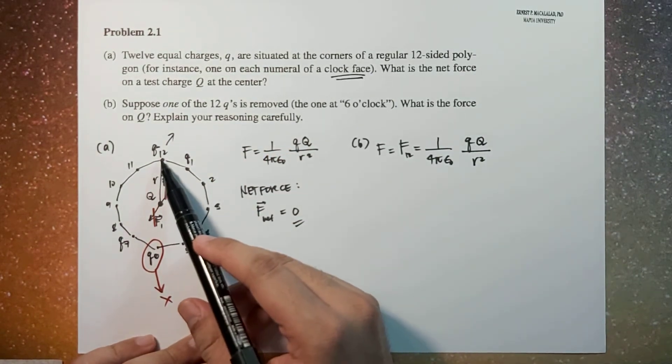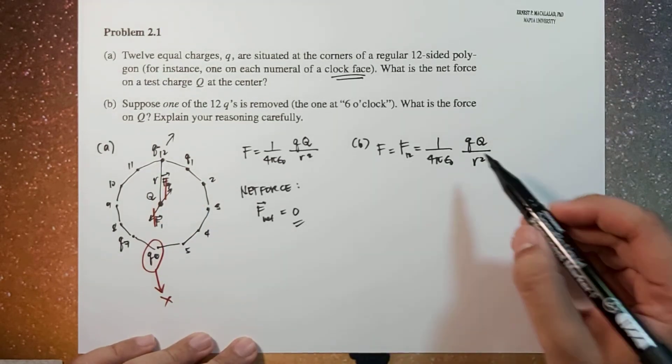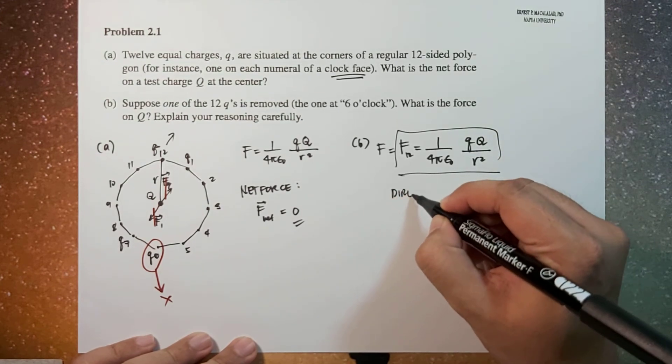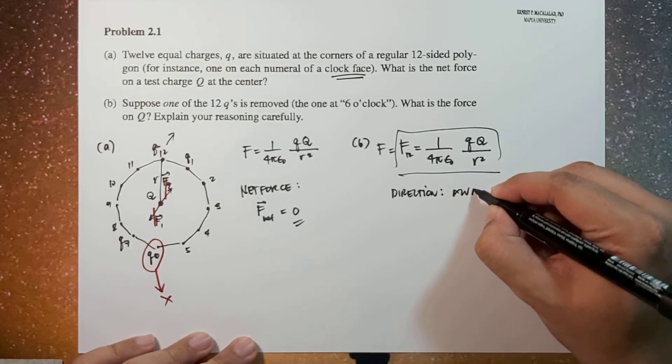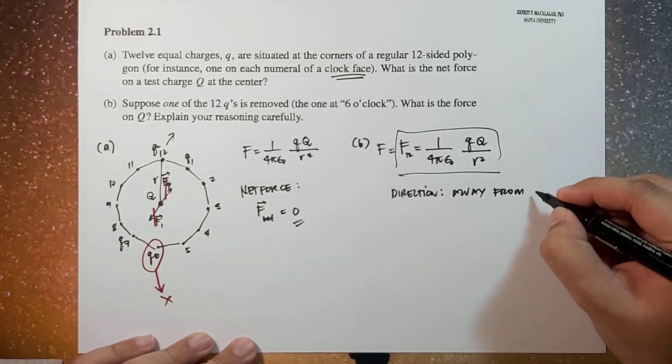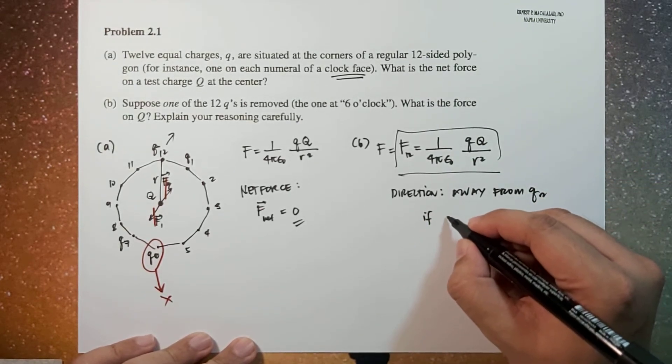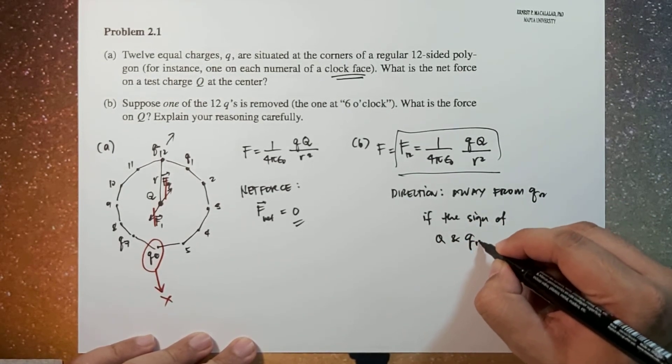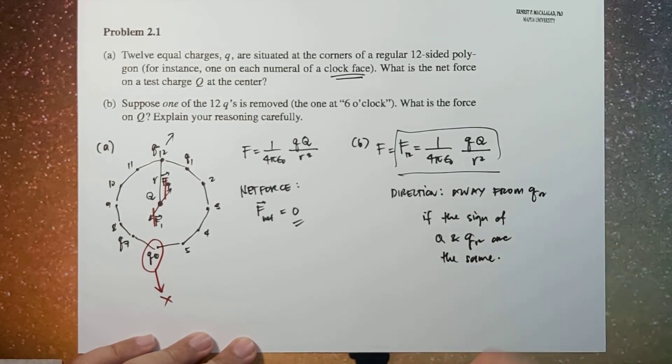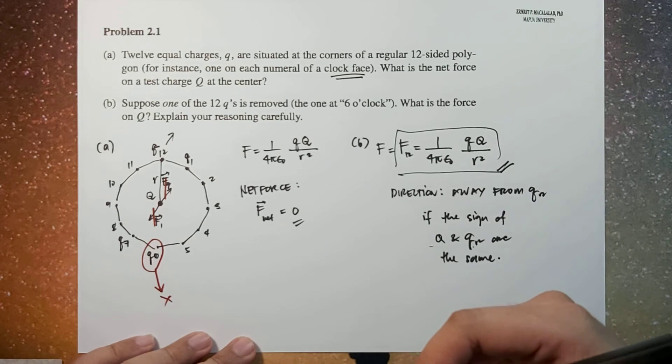And the direction will be pointing away from q12 if the signs of Q and q12 are the same. Because if the two charges have different signs, while it will still have the same magnitude, the direction will be towards q12 because the force will become attractive.